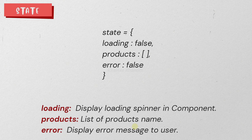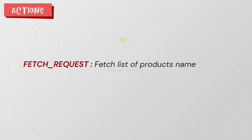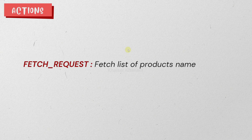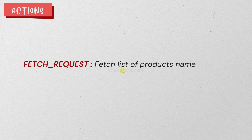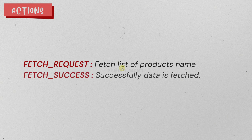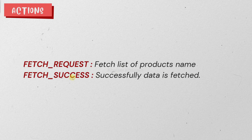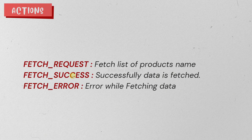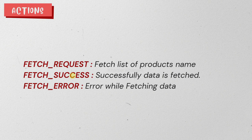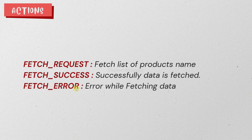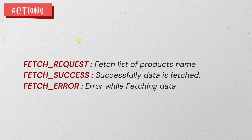This is how state will be represented in our application. Then we have actions — inside which we can define three action types. The first action type is 'fetch request', to fetch products from the API endpoint. The second and third action types depend on this first action: if the data is fetched successfully, we use 'fetch success'; if we have any error, we use 'fetch error' and accordingly display an error message to the user.